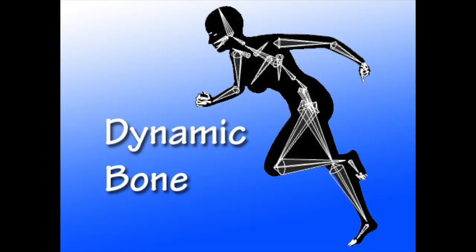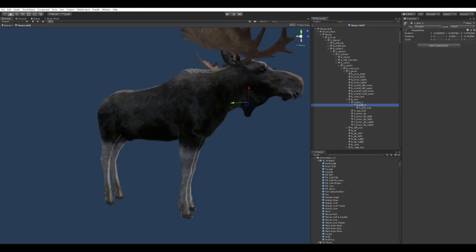So I got a nice little component called Dynamic Bone for Unity. It's designed to do just this — for body parts that move around, kind of semi-independent but also based on motion. Designed for ponytails and other bouncy parts of the body. You attach it to the animal and then tweak all these variables to get just the right kind of movement that you want.